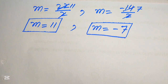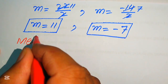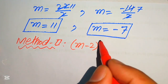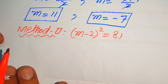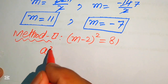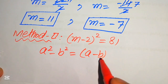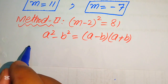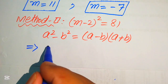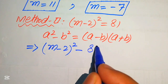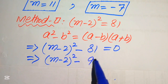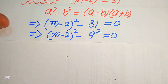From Method 1, we obtain m equals 11 and m equals minus 7. Now we move to Method 2. The given equation is (m minus 2) whole square equals 81. In this method, we use the difference of squares formula: a squared minus b squared equals (a minus b)(a plus b). We move 81 to the left side to get (m minus 2) squared minus 81 equals 0.